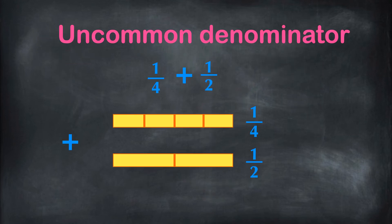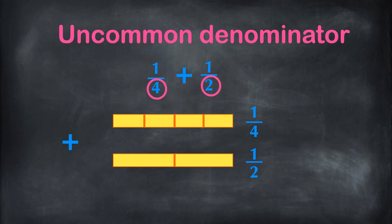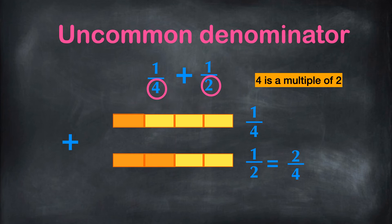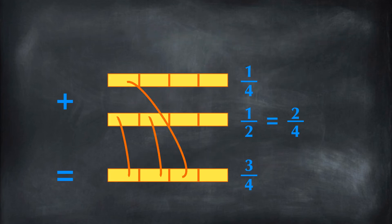Here we have 1 fourth being added with 1 half. We can see the denominators are not the same. We need to change the denominators to be the same. 4 is a multiple of 2, so we can change the denominator 2 to 4 by multiplying 2 on both numerator and denominator. 1 over 2 is the same as 2 over 4. Now we have the same denominator. 1 over 4 plus 2 over 4 gives a final answer of 3 over 4.